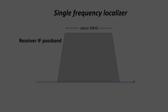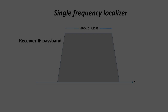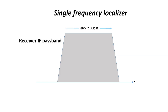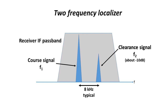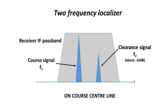The NAV receiver IF passband is quite wide at about 30 kHz — a leftover from earlier times when VHF receivers and transmitters were less stable. On a single-frequency localiser the ILS signal sits in the centre of the passband. For a two-frequency localiser each frequency is offset about 4 kHz from the nominal centre frequency, ending up about 8 kHz apart. When the aircraft is on course the course signal is stronger and captures the receiver detector to drive the CDI indication. When the aircraft is in the clearance area the course signal is weaker, the receiver AGC brings up the clearance signal to full level in the IF, and it captures the detector to drive the CDI.